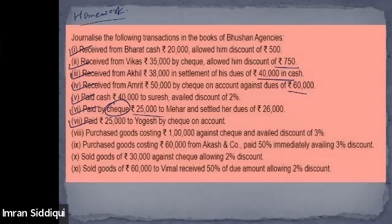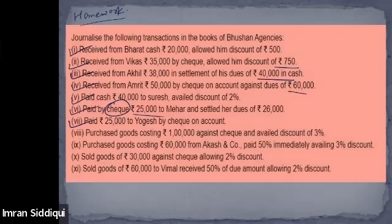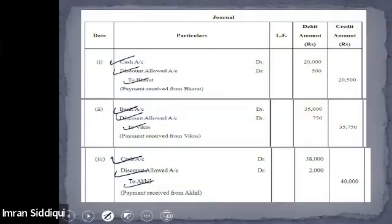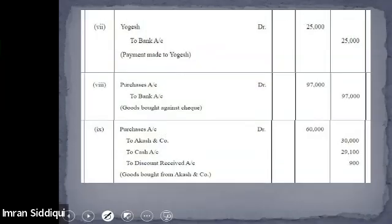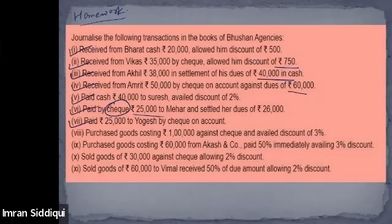Seventh transaction: paid 25,000 to Yogesh by cheque on account. Yogesh account debited to bank account — that's right.